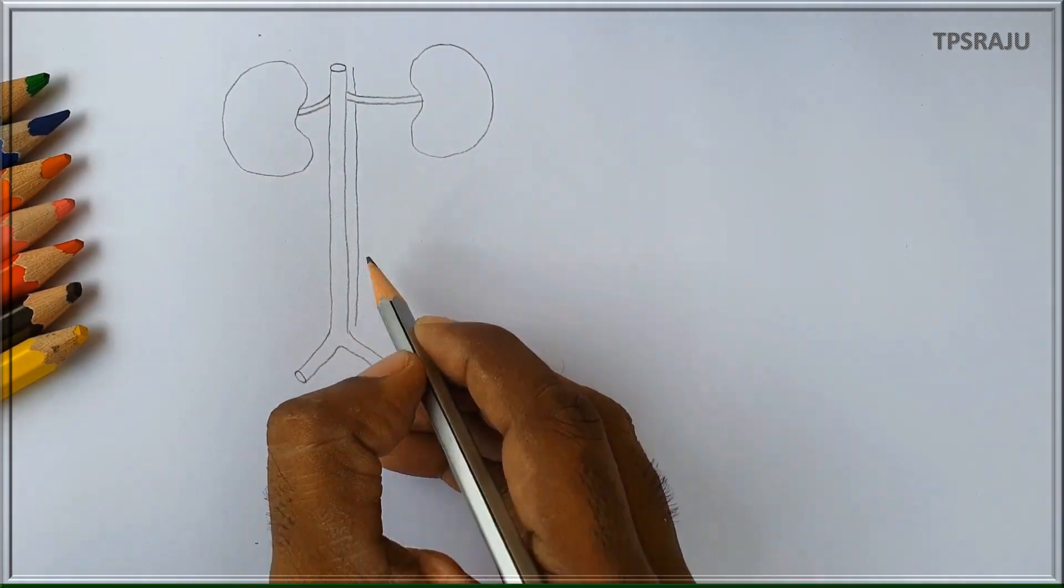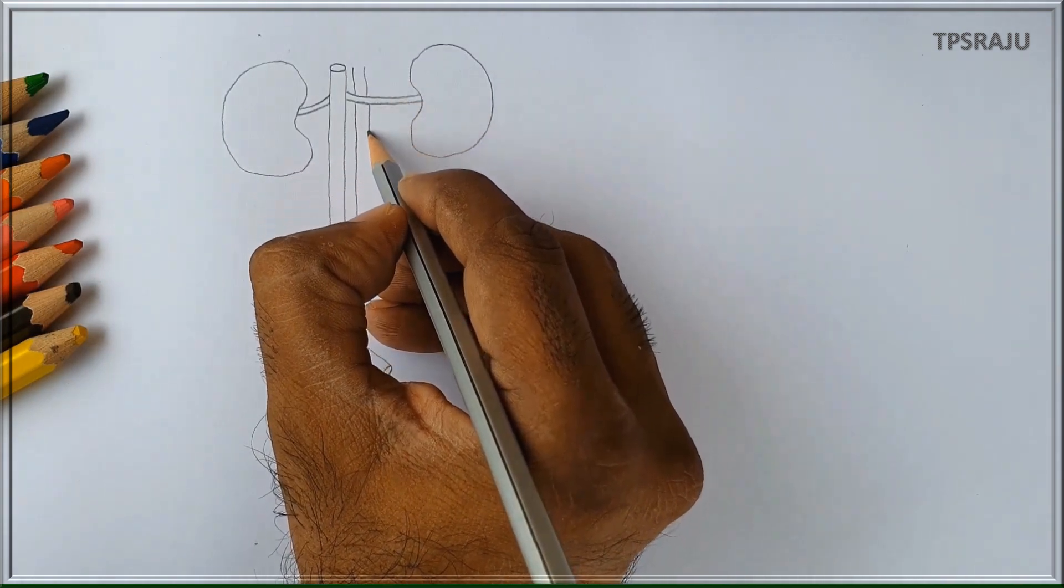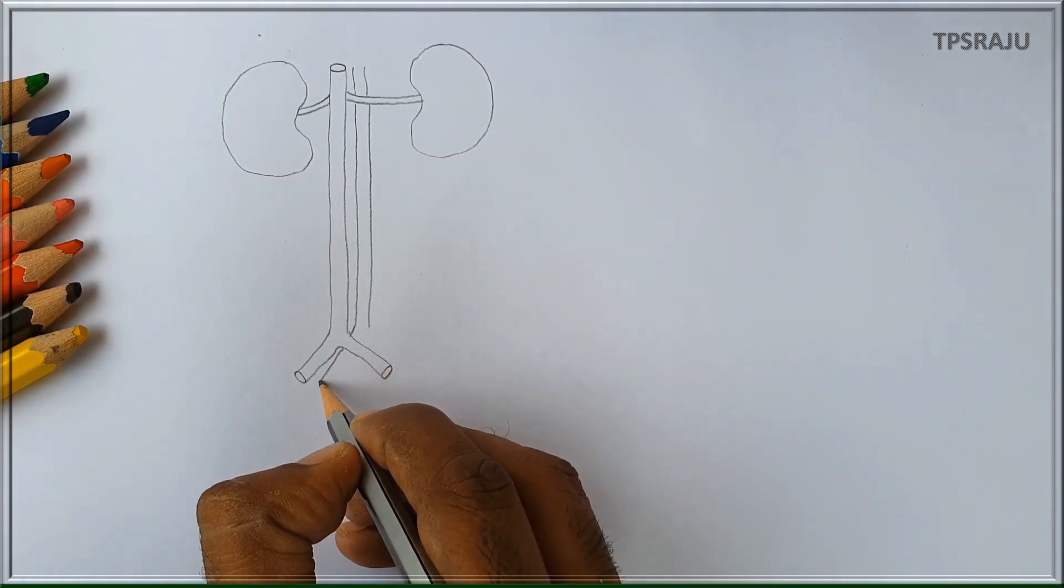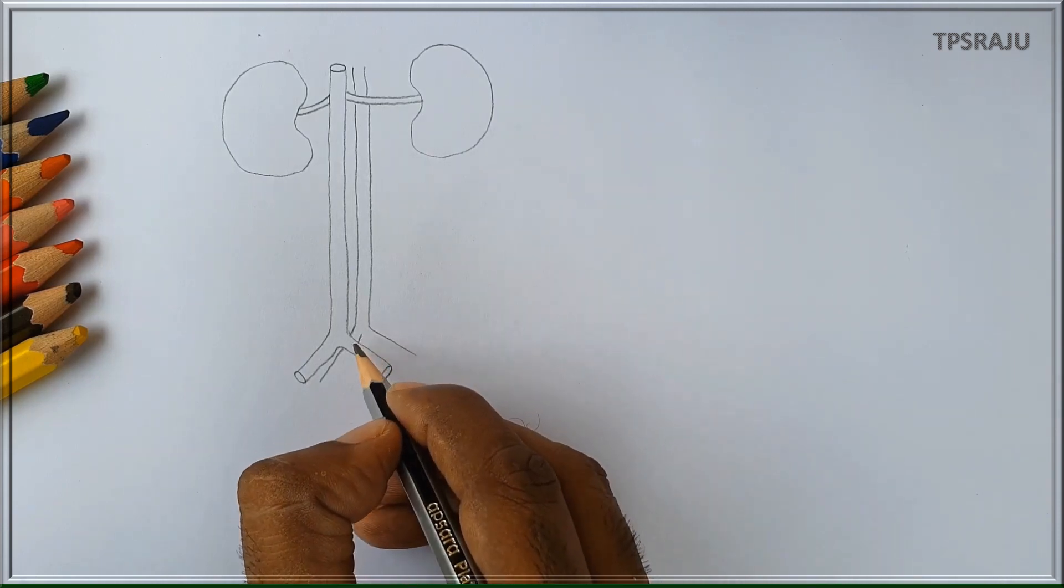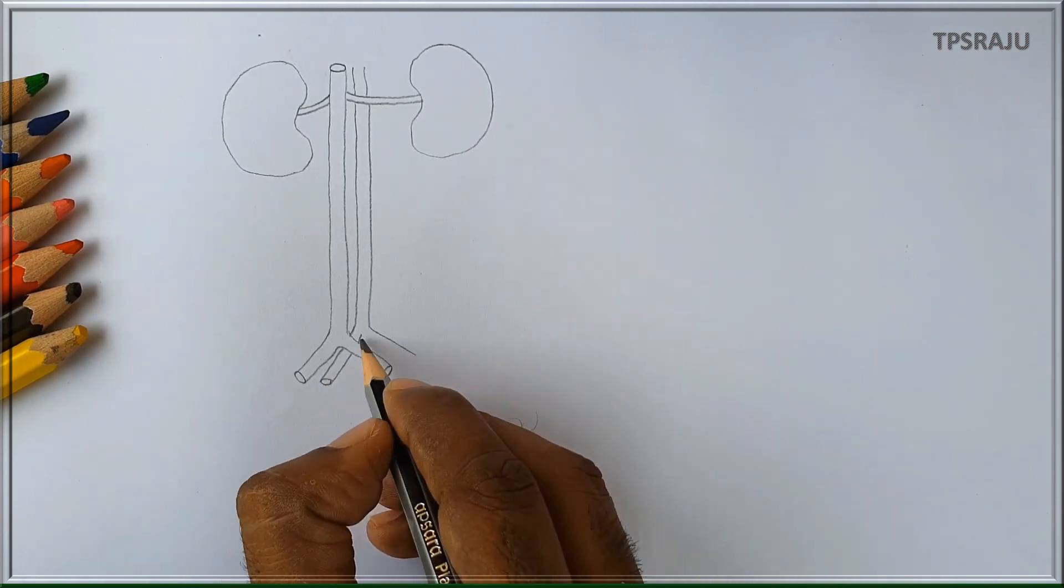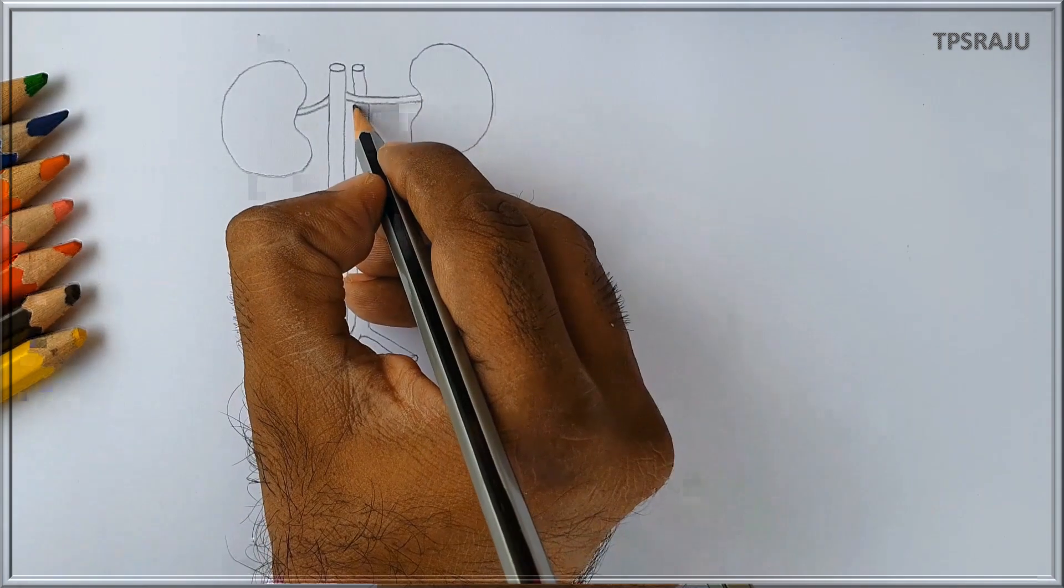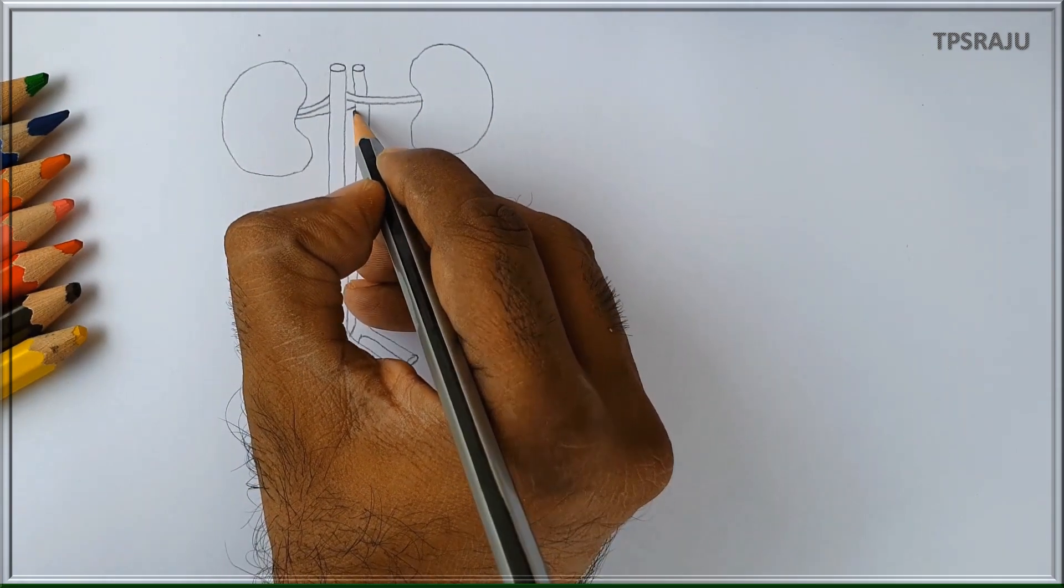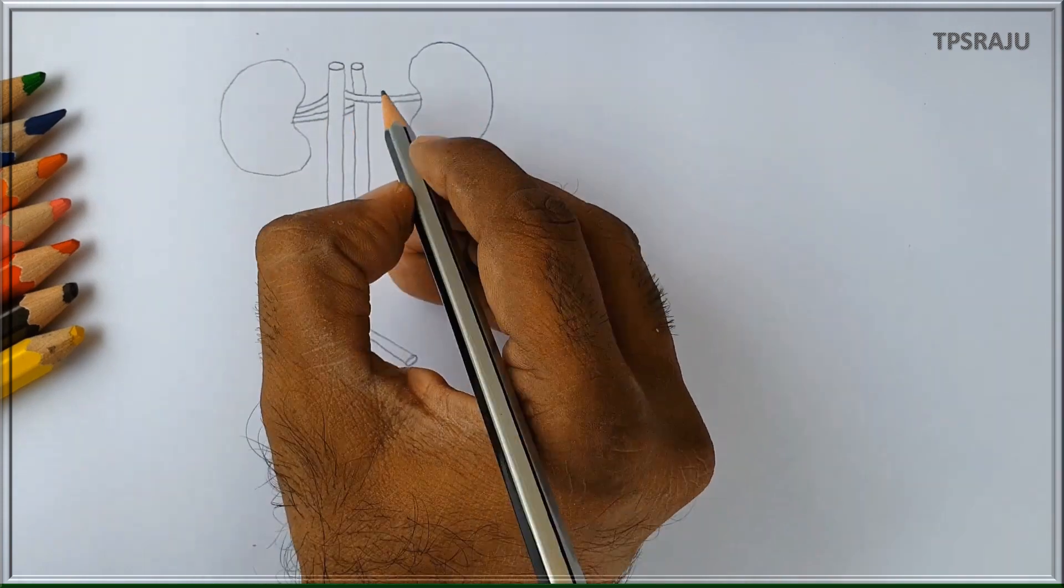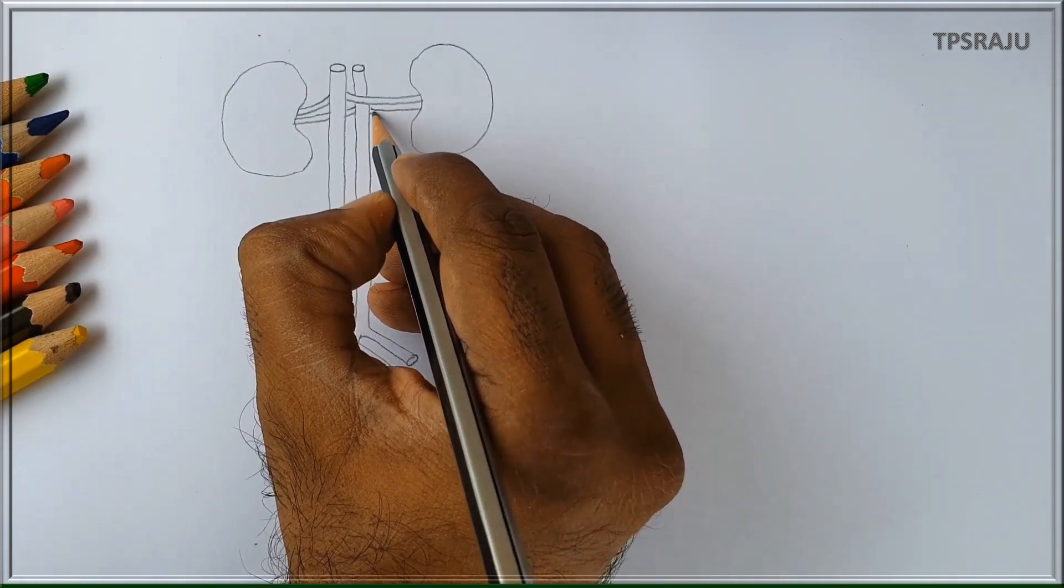Inferior vena cava also passes through the space present between two kidneys. This is inferior vena cava. Two renal veins which are formed from the kidneys connect to inferior vena cava.